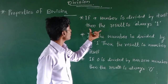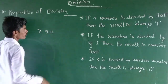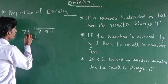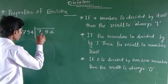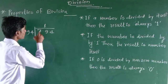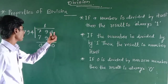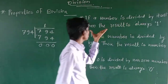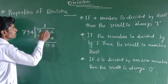If a number is divided by itself, then the result is 1. We will take an example — suppose 794. So 794 divided by 794, that is the number divided by itself, the result will be 1. The division of 794 by 794 is 1 because the subtraction results in 0. So the first property is: if a number is divided by itself, the result is 1.